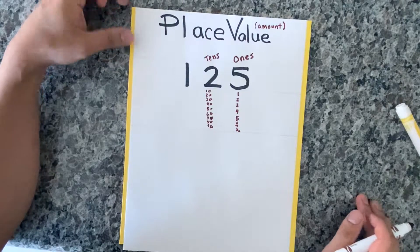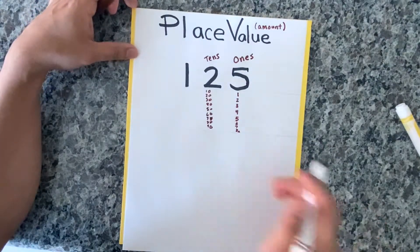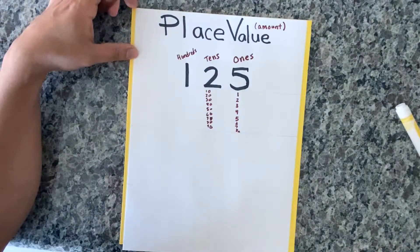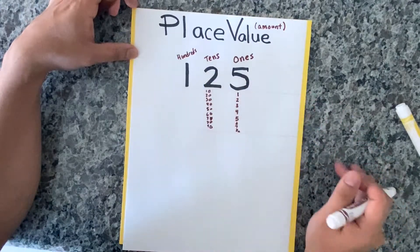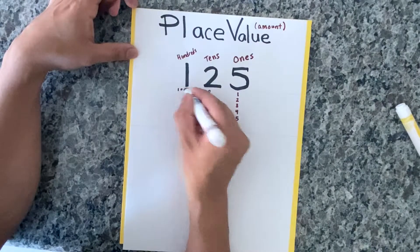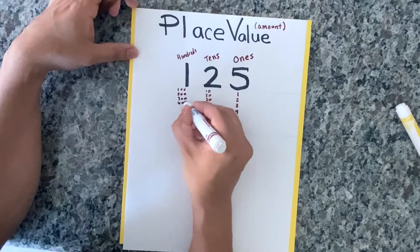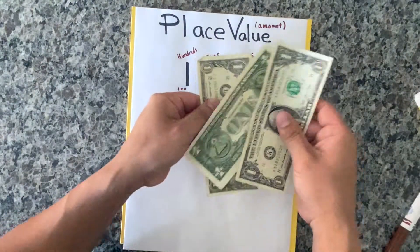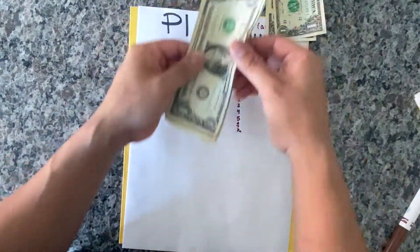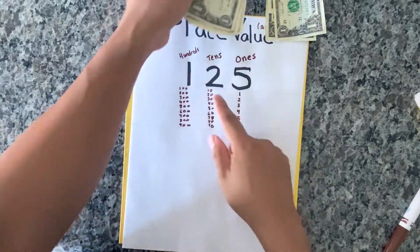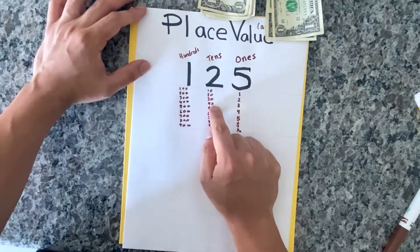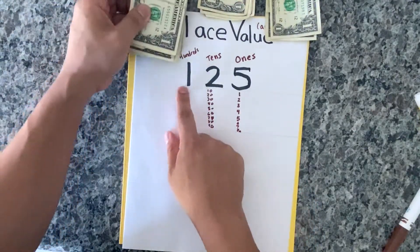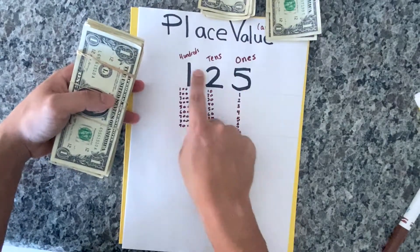And the last place value here is the one in front — that goes by hundreds. Let's write it down: 100, 200, 300, 400, 500, 600, 700. So again: the rightmost goes by ones, the middle goes by tens, and the first one goes by hundreds. The number 125 — each digit is in a certain place and represents a certain value.